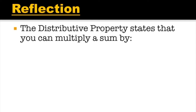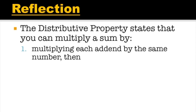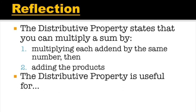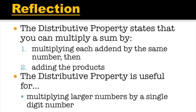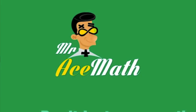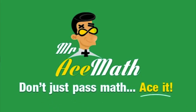So what did we learn from this lesson? The distributive property states you can multiply a sum by: one, multiplying each addend by the same number, then two, adding the products. The distributive property is useful for multiplying larger numbers by a single-digit number. Don't forget to like, share, and subscribe. Thanks for using Mr. Ace Math — don't just pass math, ace it.